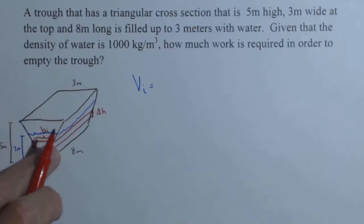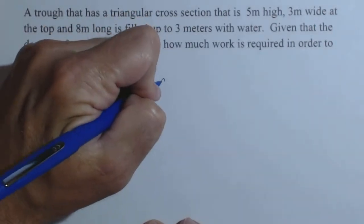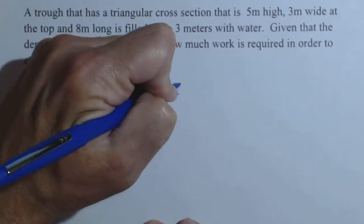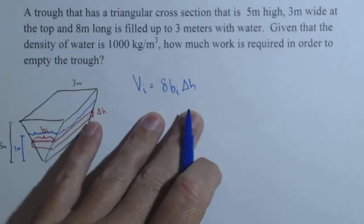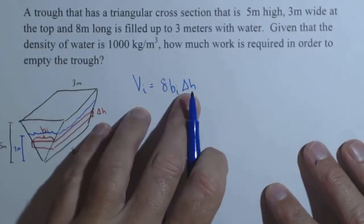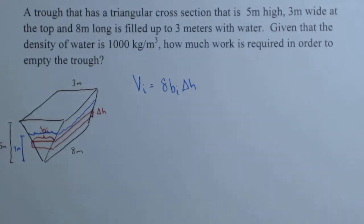Maybe we call it b sub i for a base, because it's kind of like a base of a triangle in there. So we have our three dimensions, b sub i times 8 times delta H. I'm going to put the 8 out front: 8 times b sub i times delta H. What we should notice right away is we have two variables in there, b and H. So we want to see if we can establish a relationship between those two.